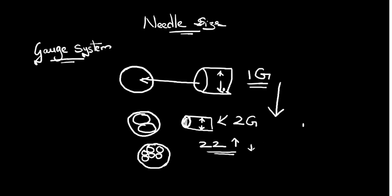So that is the basic concept of the gauge system. If you look into our needle, we have different kinds of diameters. We have 14 gauge needles, or more commonly 16 gauge needles with the hub which is a gray color. The hub is of gray color in a 16 gauge. Then we have 18 gauge—the hub is basically green color.